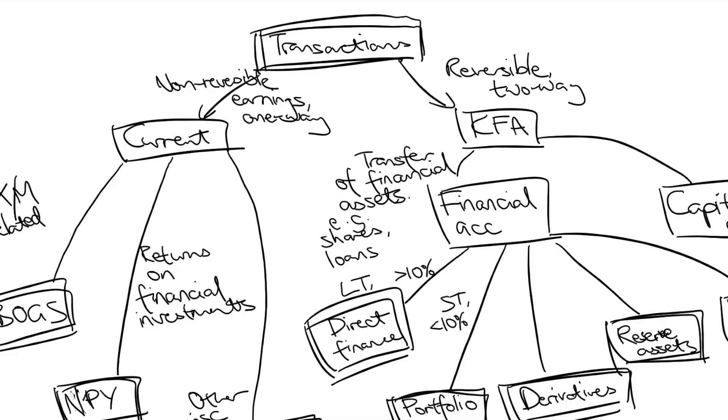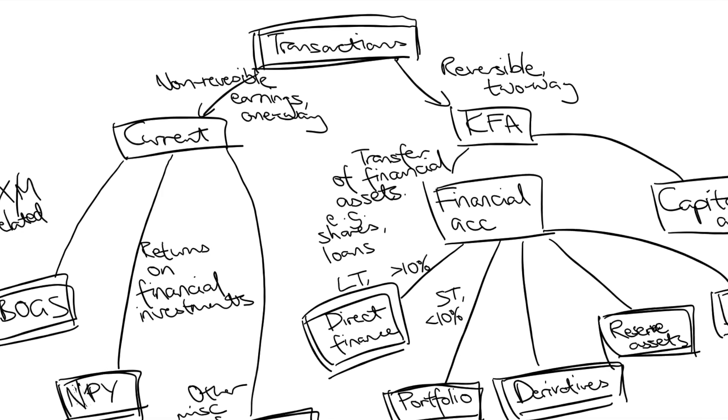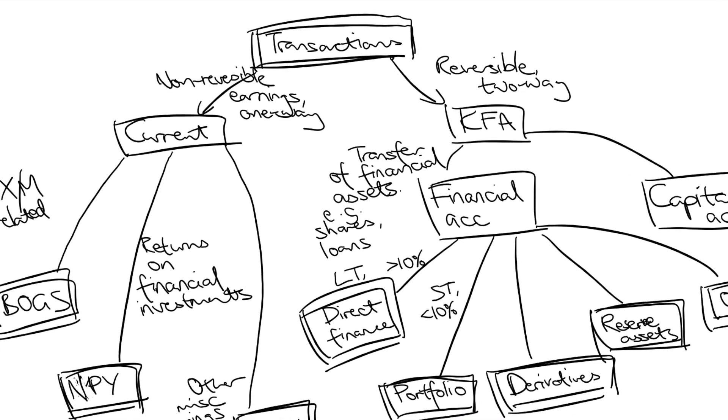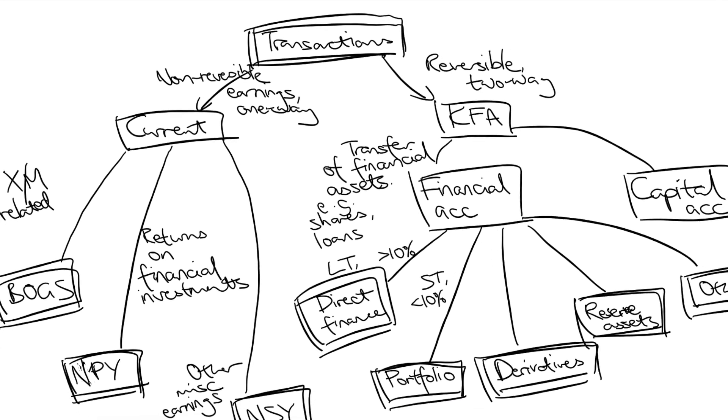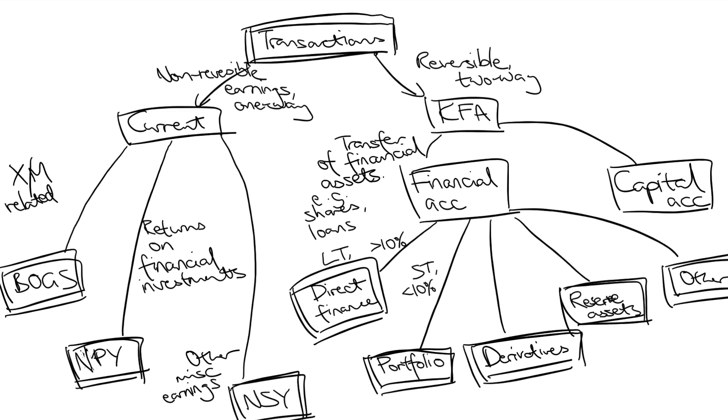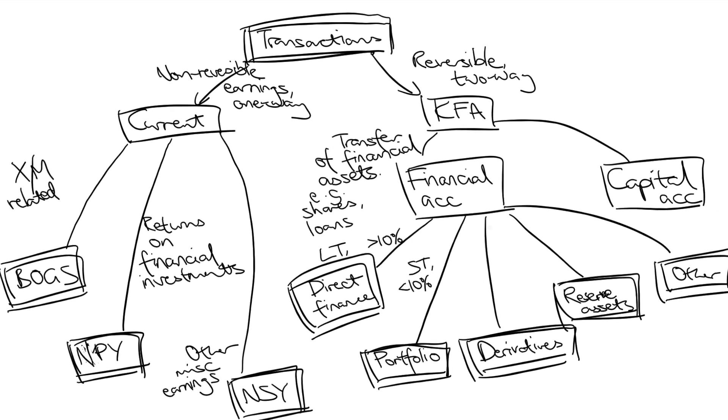Welcome to HSE Economics Made Easy. This video is part three of a series on the balance of payments — you'll find links to part one and part two in the description below. Previously, we learned about the different accounts and sub-accounts into which transactions get sorted, including the current, financial, and capital accounts, and we looked at the relationships between them. Today I want to talk about the influences on the current account, and as I mentioned in previous videos, this is where the big marks are.